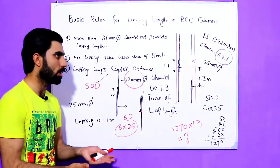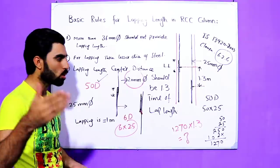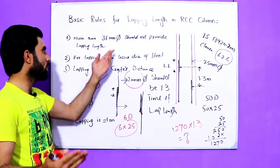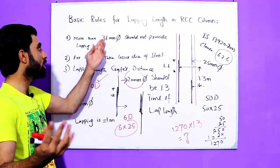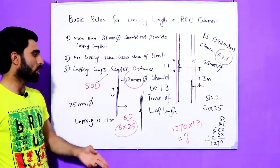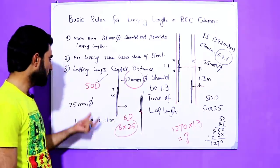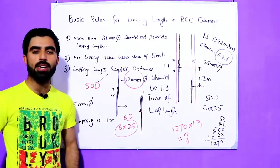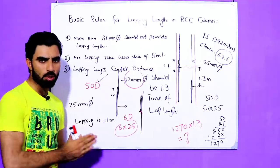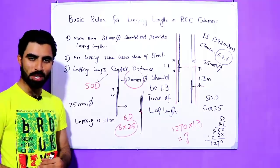So these are the helpful points and rules for lapping length: why we provide it, how to calculate it, what the center-to-center spacing should be, where lapping is provided, that lapping should not be used for bars over 36mm diameter, and which diameter to take when two different bar sizes are overlapped. If you have any questions related to this topic, please comment and I will try to reply. Thanks for watching, see you in the next video. Goodbye.